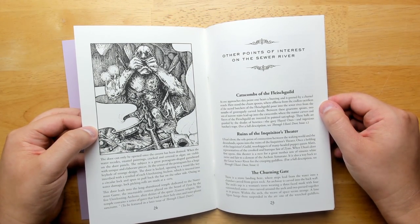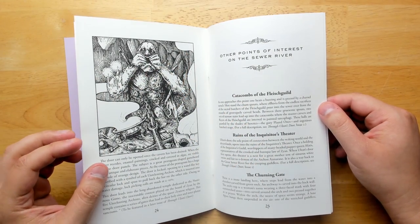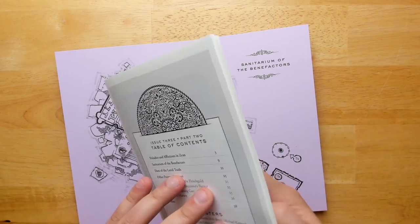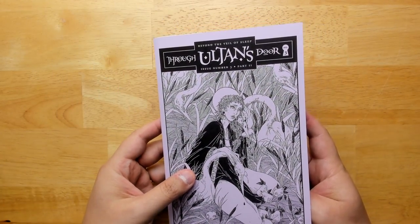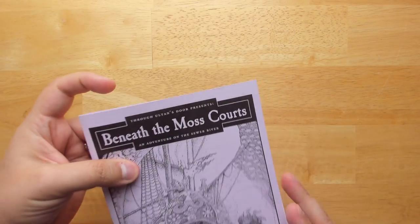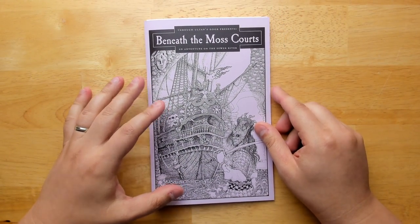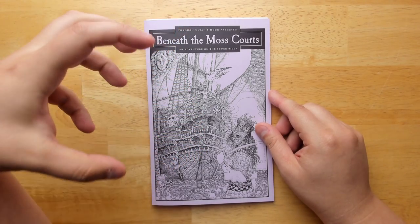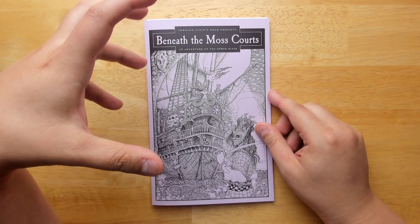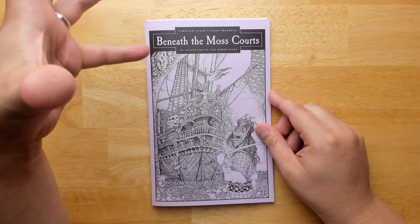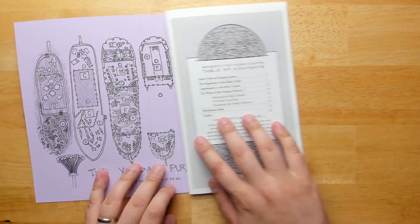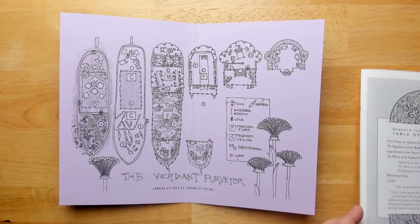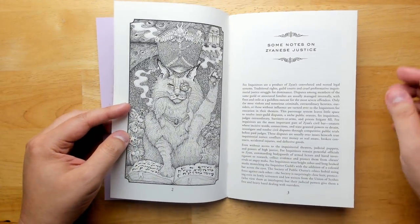Other points of interest along the sewer river. These two ones are fleshed out in previous issues. We have the churning gate and the harbor before we get to the credits at the very back. The last issue or the last part of this issue is beneath the moss court. So this is an actual adventure, which is done by Gus L who's another OSR writer. And the idea here is you're going to be doing an adventure that takes place in Zion, the city above. And that's also going to be connected down to things happening in the sewer system below where there is a pirate gang that has taken over a little fortress with a sunken boat on it.